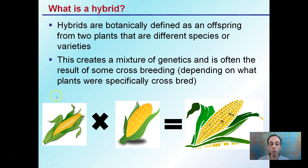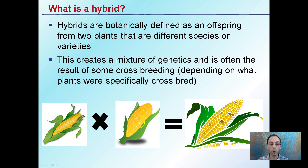So what's a hybrid? I use corn as the example, because hybrid corn is probably well known and understood. Hybrids are botanically defined as offspring from two plants that are different species or varieties. A hybrid creates a mixture of genetics and is often the result of crossbreeding. For example, we could see two different corn plants: one produces very small kernels, the other produces very large kernels but on a smaller cob. Crossbreeding these two develops a hybrid with larger kernels, a longer shape, and a greater area — showing evidence of both parents in the offspring.